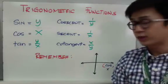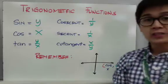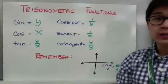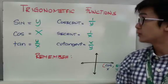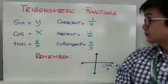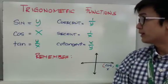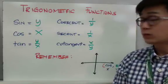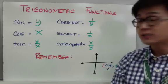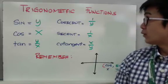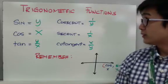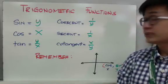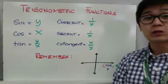In trigonometry, if we base it off the xy-plane, we don't use x and y as variable names anymore, because cosine is x and sine is y. So sine equals y, cosine equals x, and tangent equals y over x. For the reciprocal functions: cosecant is 1 over y, secant is 1 over x, and cotangent is x over y. We're going to use these formulas in our next problem.